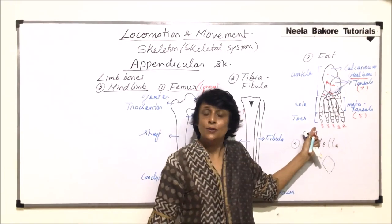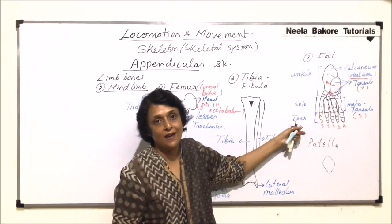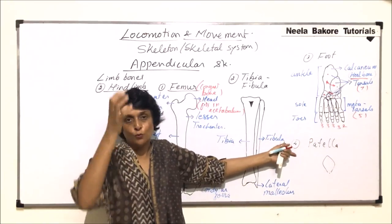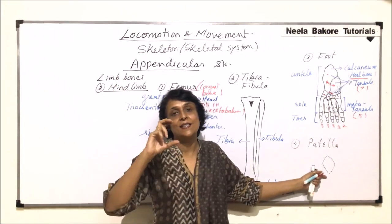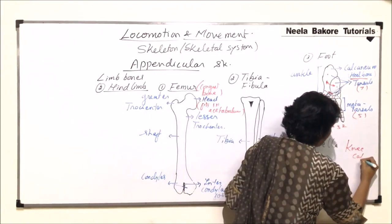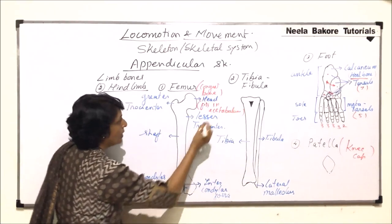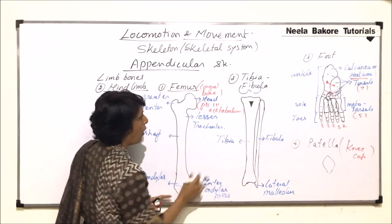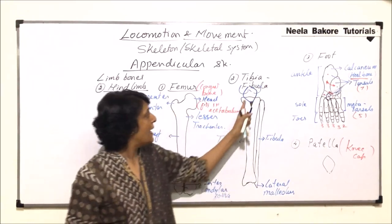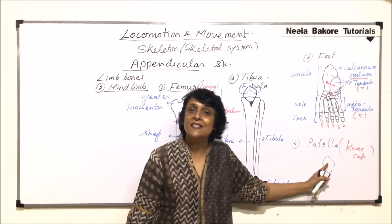So the phalangeal formula is 2, 3, 3, 3, 3, and it remains the same as in the hand. The three parts of the foot region are: ankle (made up of tarsals), sole (metatarsals), and toes (phalanges). The single additional bone in one hind leg is the patella. It is a sesamoid bone — a flat, plate-like structure normally known as the kneecap. It fits between the two condyles, and because of it the knee joint is a hinge joint.